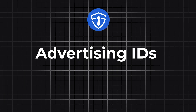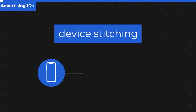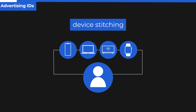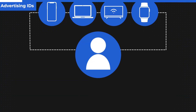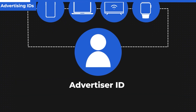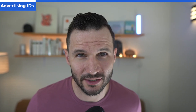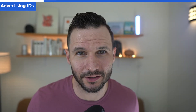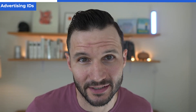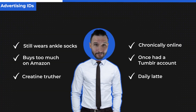Basically, device stitching is a process where, say, your phone is linked with your computer, with a smart TV, with your smartwatch, to create one single profile. That's the profile of you, the consumer, and it's known as your advertising ID — essentially your unique digital footprint. Every one of us has one of these unique fingerprints. You have one, I have one. Yours might be more detailed than mine, it might be less detailed, but the reality is that you have one that is unique and specific to you.